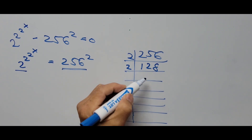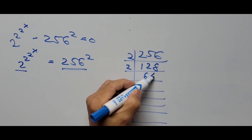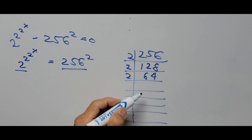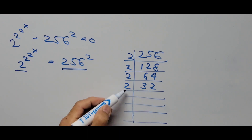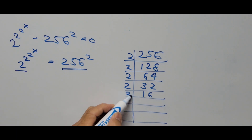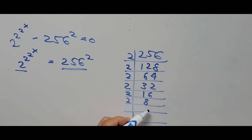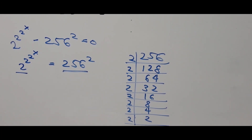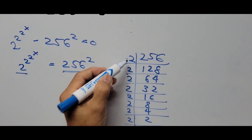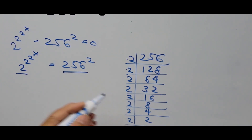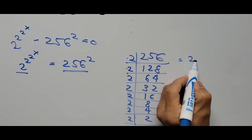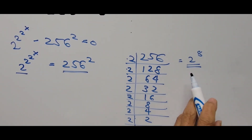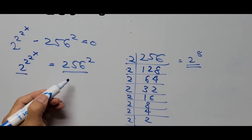Continuing: 64 divided by 2 is 32, 32 divided by 2 is 16, 16 divided by 2 is 8, 8 divided by 2 is 4, 4 divided by 2 is 2, and 2 divided by 2 is 1. We divided by 2 a total of 8 times, so 256 equals 2 raised to the 8th power.